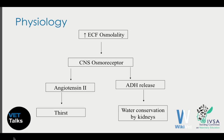So very briefly, to start with a little bit of basic physiology. We need to think about what drives thirst in our patients, and what controls the amount of water that is lost in the urine through the kidneys. So when extracellular fluid osmolality increases, that is detected by osmoreceptors in the central nervous system, and that eventually triggers release of angiotensin II, which stimulates the thirst centre in the brain, and also triggers the release of antidiuretic hormone from the pituitary gland, which leads to water conservation in the kidneys.